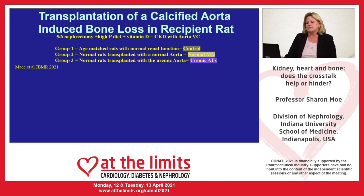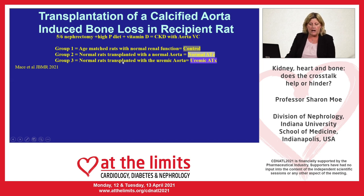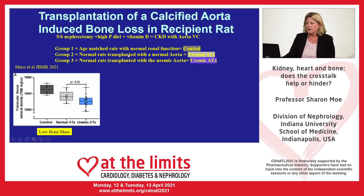This study, published recently by a group in Denmark, took advantage of a unique design. They took five-sixths nephrectomy rats, induced kidney disease, fed them a high phosphorus diet with lots of vitamin D, resulting in chronic kidney disease animals with intensive aortic vascular calcification. They then transplanted the calcified aortas into normal rats, and normal aortas into other normal rats. The animals who received the calcified aorta had lower bone mineral density than those who received the normal aorta.